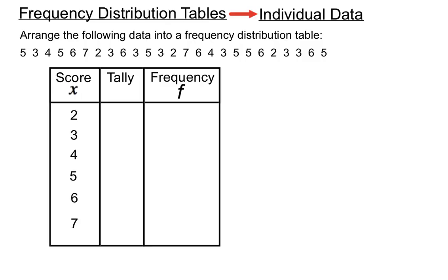So we put the scores down. We look for the lower score amongst them, and that's a 2, and we look at the higher score, which is a 7, and we'll put all the scores listed down there.